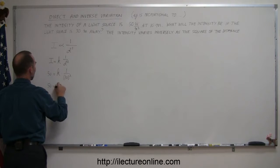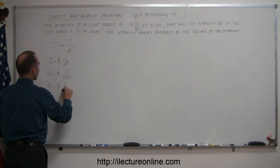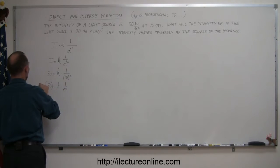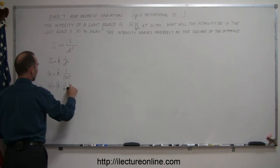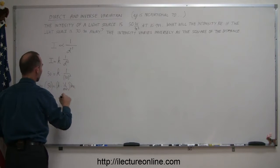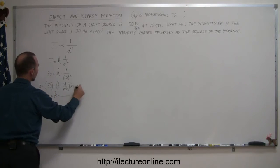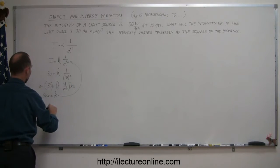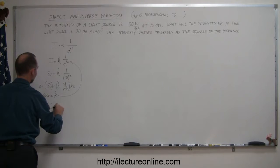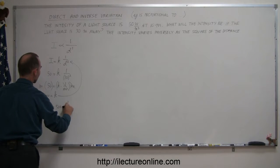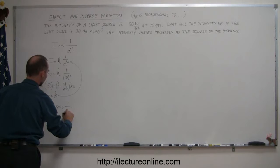Simplifying that, we have 50 is equal to k times 1 over 100. And then if we multiply both sides by 100, this will cancel out, and we end up with 5,000 is equal to k. And when we plug that back into the equation, we can now say that the intensity is equal to 5,000 times 1 over the distance squared, d squared. There's our equation.